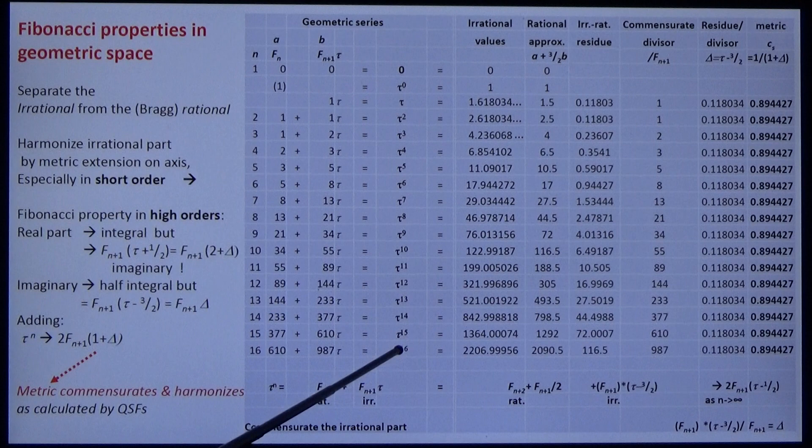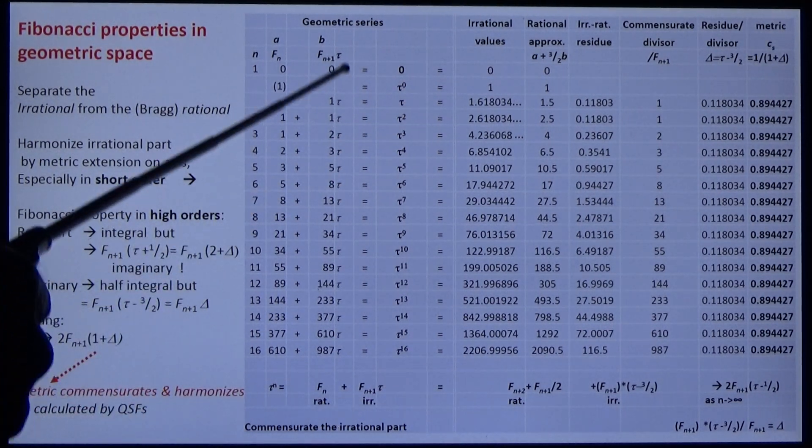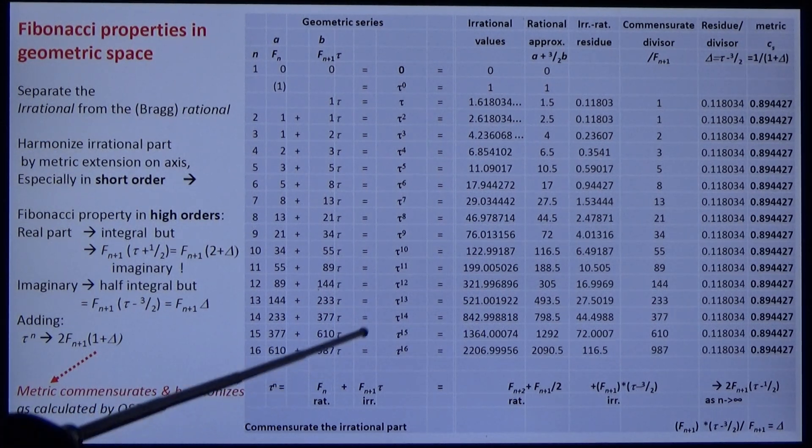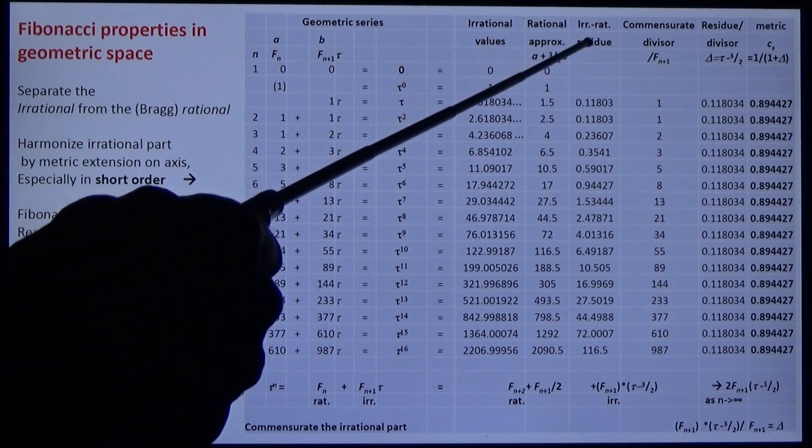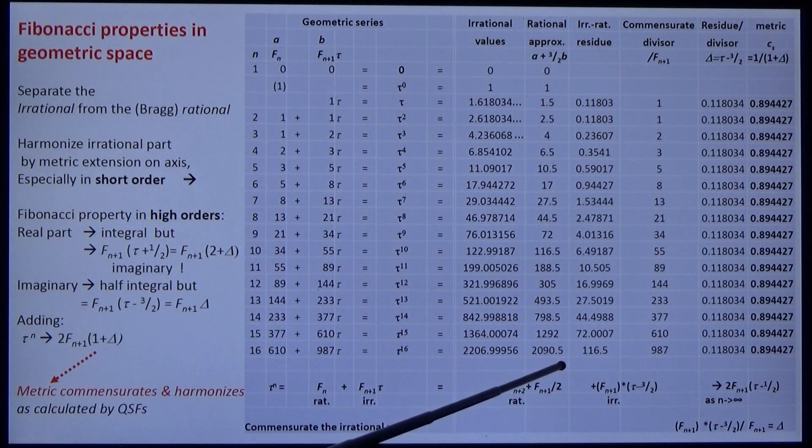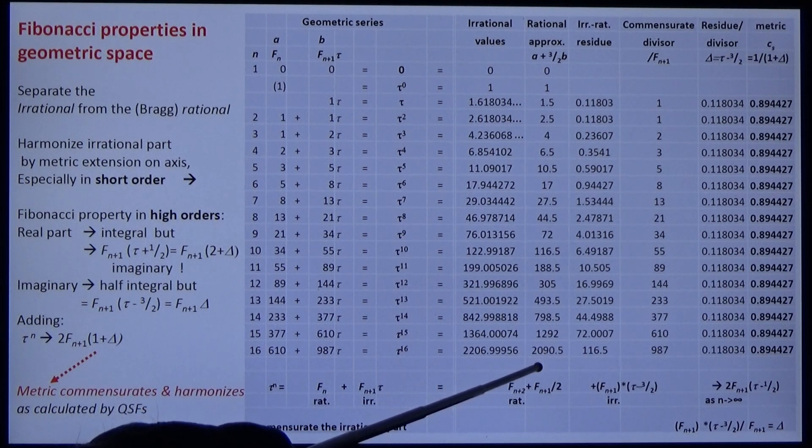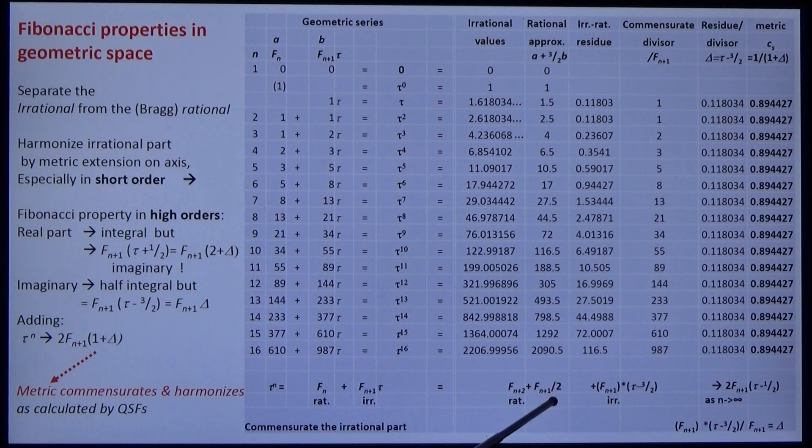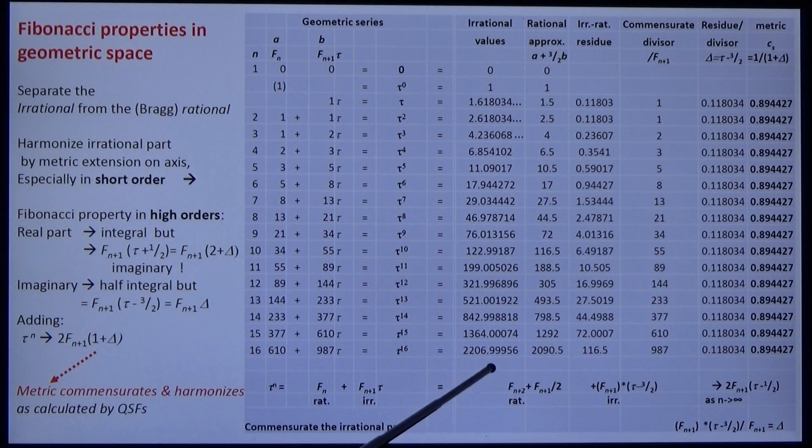Here's the geometric series. It's irrational, except for the first two terms. And here's the Fibonacci equivalent. It has a rational part and an irrational part. We can rationalize it by substituting for tau the rational ratio, three halves, and get a rational series. When you calculate the QSF, the quasi-structure factor for this rational series, you find it as Bragg-like, with CS equals 1. And that tells you that the metric is due to the irrational part of the irrational series.